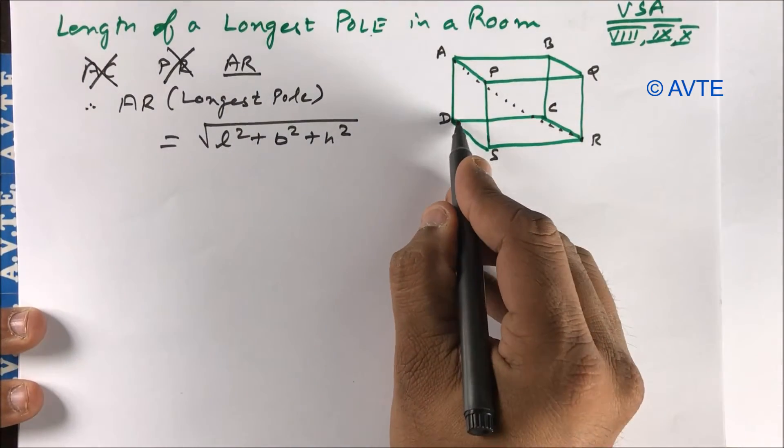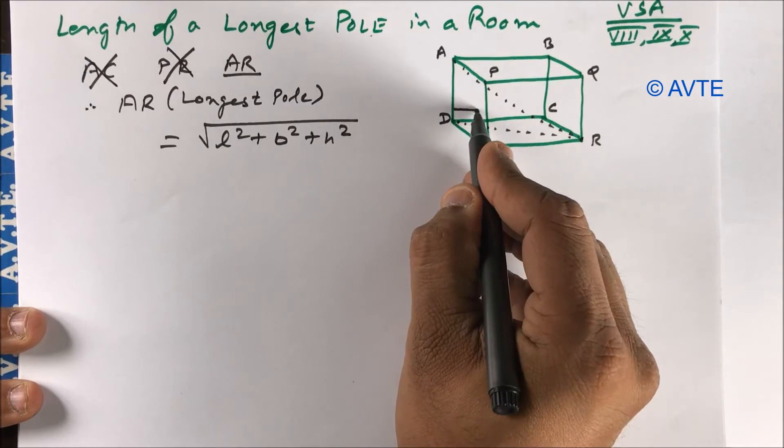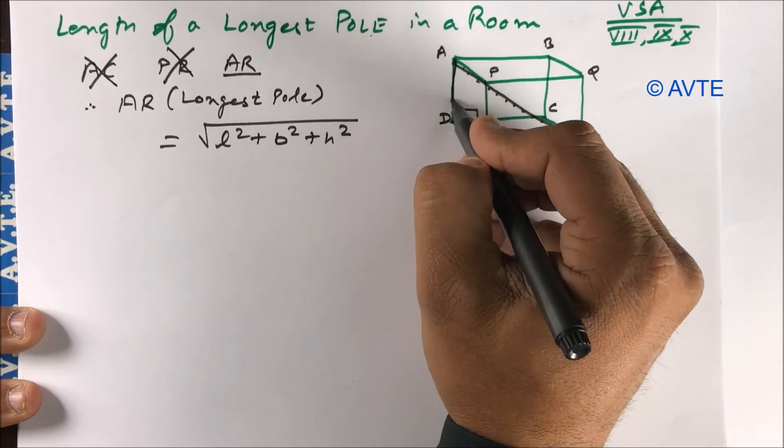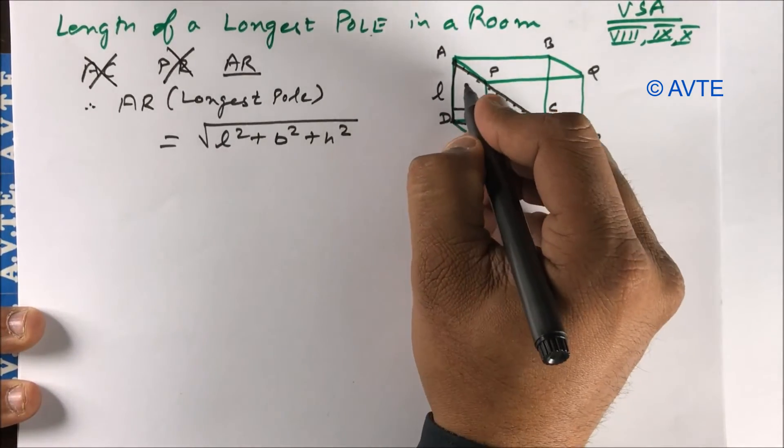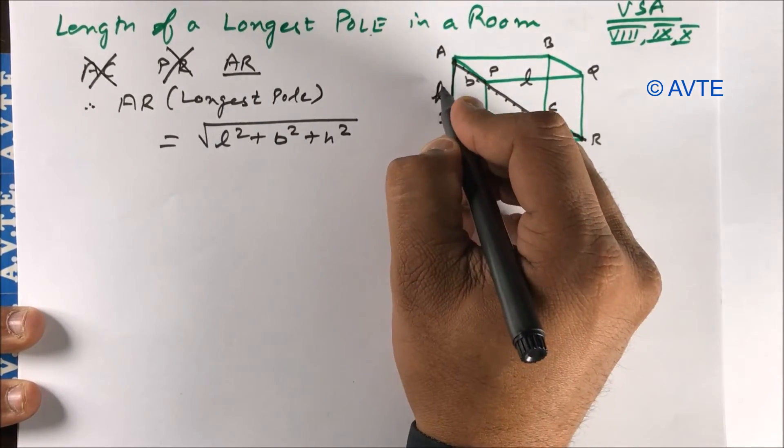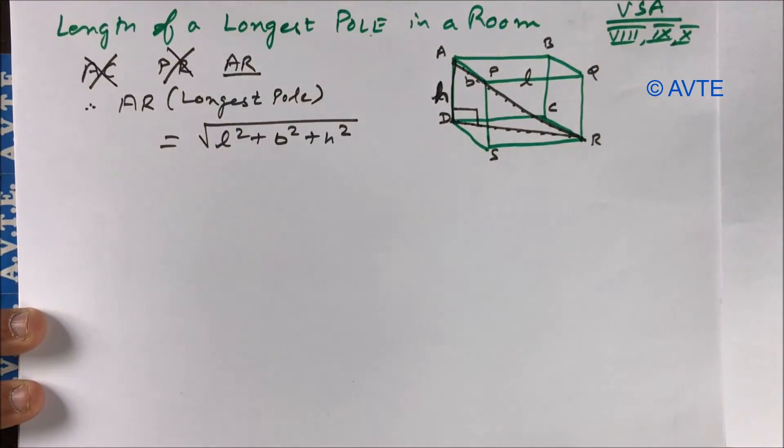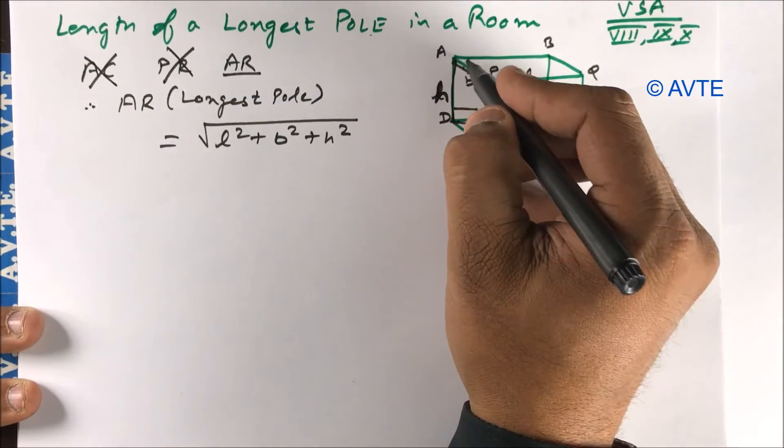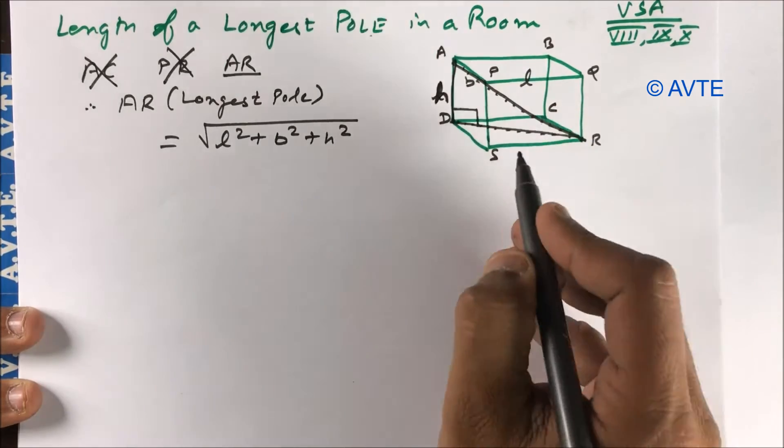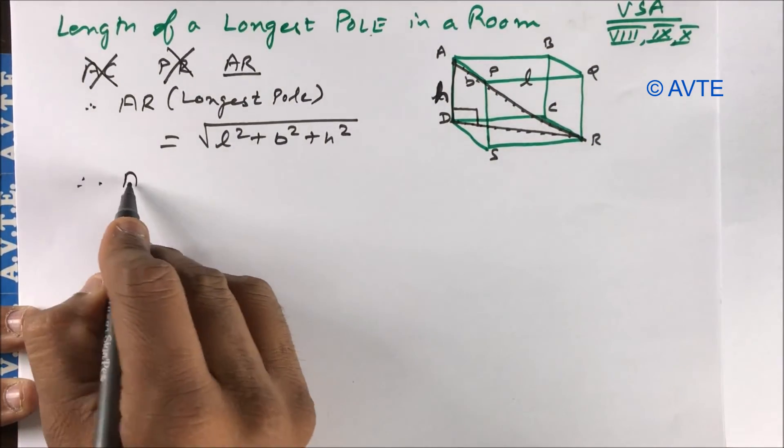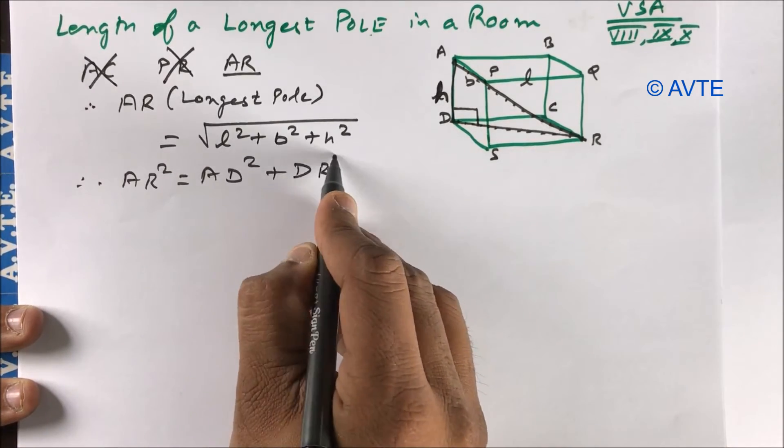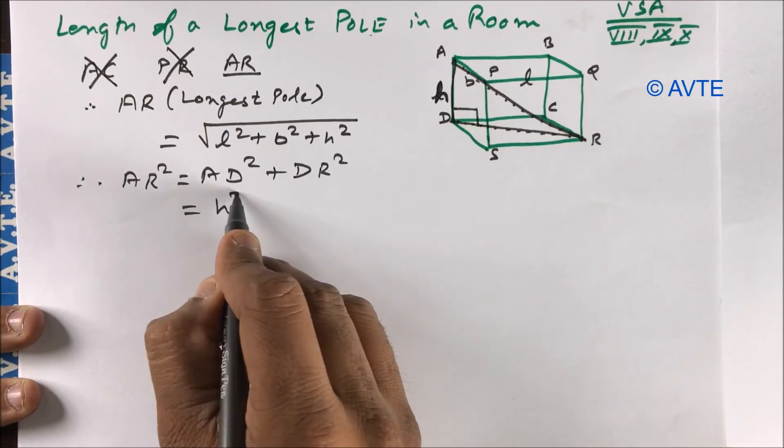So how to find AR square? So this is your 90 degree. This is your length, this is your breadth, this is your height. So AR square is AD square plus DR square. And AD square is H square.